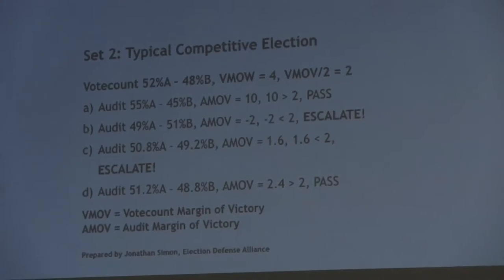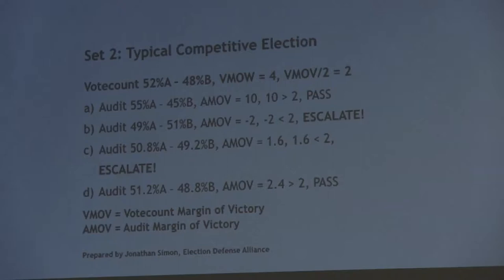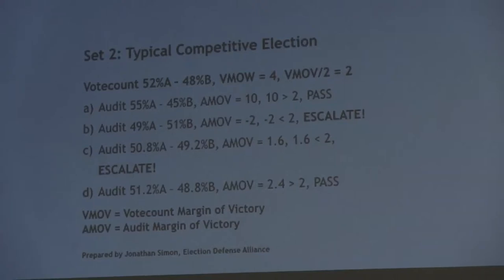Now we have a close election — the ones we probably care about most. The 70-30 elections are kind of smell test problems if you rig one of those. If you reverse one of those, you've got some fair chance of questions being asked with or without an audit — there will be pre-election polls and all sorts of stuff. The ones we're really worried about are these close ones: 52-48.